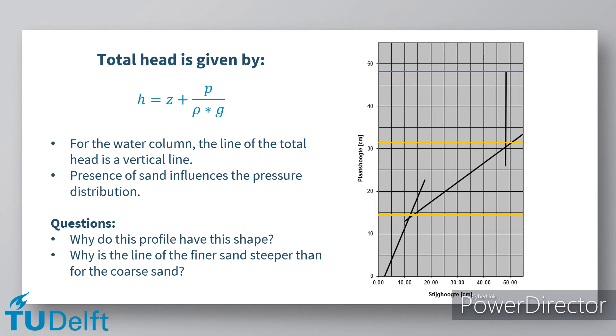Remember that the total head is a function of both the elevation head and the pressure head. In the top part of this figure, the total head is a constant vertical line. This is because the total head is only determined by the water column.